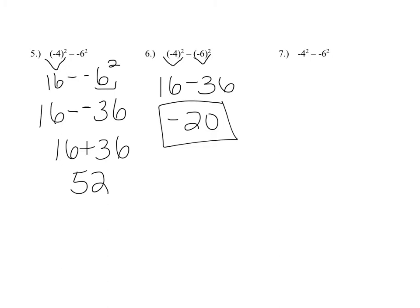Number 7 has no parentheses whatsoever. So essentially this is saying minus 4 squared minus another minus 6 squared — the 2 is directly attached to the 4. So you do 4 squared first, which is 16, bring that negative sign down. Then do 6 squared, which is 36, bring that negative sign down — and it's subtraction. Now you can say that's negative 16 plus 36, because it's minus a negative, and negative 16 plus 36 is 20.